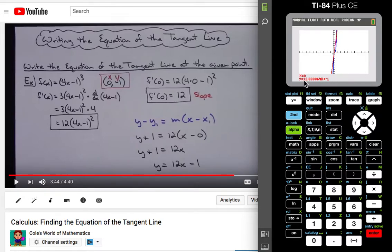Now it does calculate y equals 12.000064 x plus negative 1 and as you can see here in this video in the background I got a 12 x minus 1 when I did it by hand.